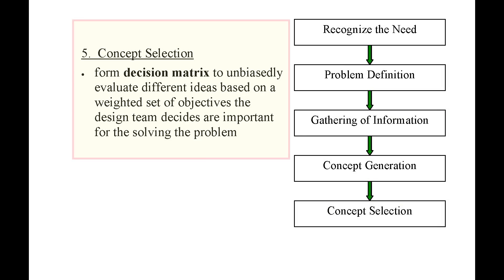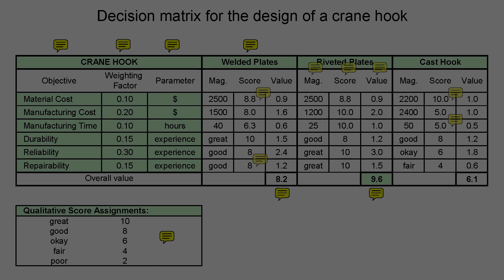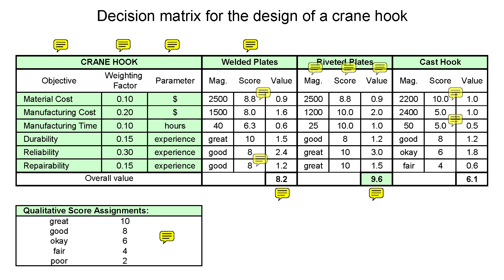The fifth, and arguably most important, step of the design process is concept selection. At this point, the design team typically has several ideas that have been investigated, and they have to select the idea or ideas on which to focus the team's resources. The most common method of concept selection used in industry is to form a decision matrix to unbiasedly evaluate the different concepts based on a weighted set of objectives the design team decides are important for solving the problem. The course notes provide a decision matrix example for the design of a crane hook.